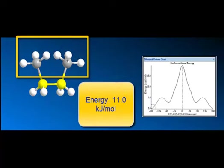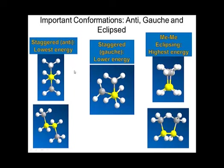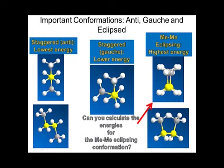For butane, the anti conformation — two methyl groups 180 degrees apart — is the lowest-energy conformation. The gauche conformation, where the two CH₃ groups are 60 degrees to one another, is higher in energy by about 3.8 kilojoules per mole. The methyl-methyl eclipsing interaction costs 11 kilojoules per mole and is a very unfavorable steric interaction.